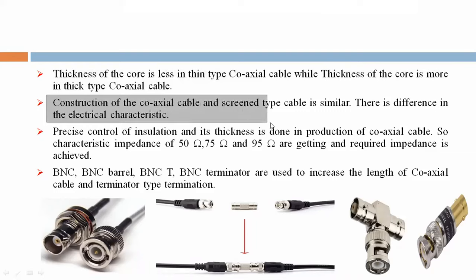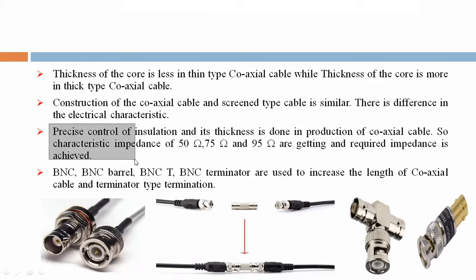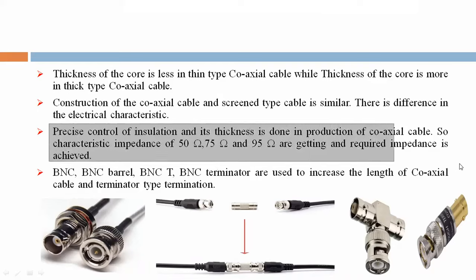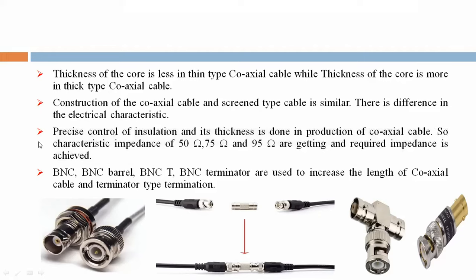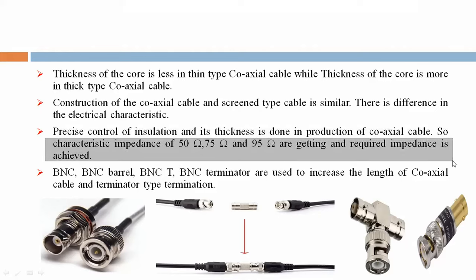The construction of co-axial cable and screen type cable is similar, but there is a difference in the electrical characteristics. A precise control of insulation and its thickness is done in the production of co-axial cable, so characteristic impedances of 50 ohm, 75 ohm, and 95 ohm are achieved.